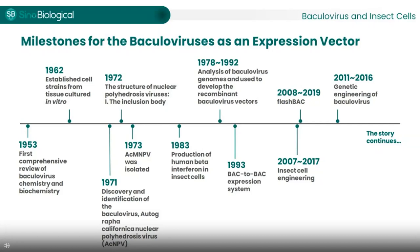All of them are commercial systems. You can find them online. BEVS has become a universal platform to express recombinant proteins, which find use in drug discovery, structural analysis, vaccine development, and other applications.